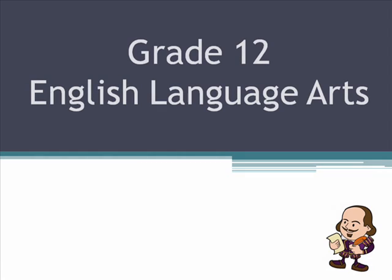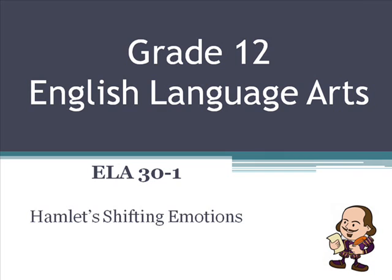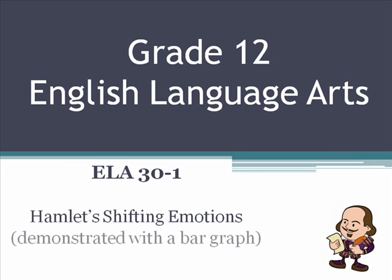We're going to be talking about Grade 12 English Language Arts 30-1. For this assignment, we're going to create a bar graph that explores Hamlet's shifting emotions throughout the play. By this point, students have read the entire play and have probably watched a video version as well. Right before this assignment, we might want to refresh their memory by pointing out significant passages, possibly showing video clips.